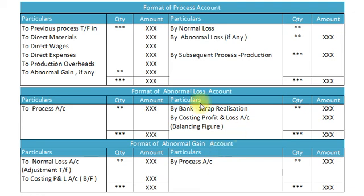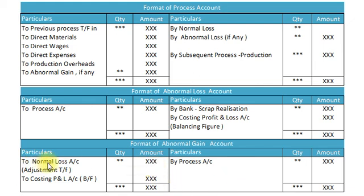If there is an abnormal gain, it is recorded in the process account on the debit side. In the Abnormal Gain Account, on the credit side we record: by Process Account — quantity and amount. On the debit side we record: to Normal Loss Account — quantity and cost price, which is an adjustment for the transfer from normal loss to abnormal gain. The balancing figure represents the profit of the abnormal gain and is transferred to the Costing Profit and Loss Account. We record to Normal Loss Account because, due to abnormal gain, the normal loss was reduced, so the Normal Loss Account is adjusted against the Abnormal Gain Account. The accounting entry is: Abnormal Gain Account debit to Normal Loss Account. Finally, the Abnormal Gain Account is closed.